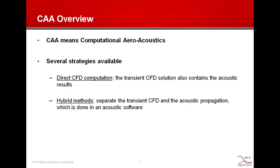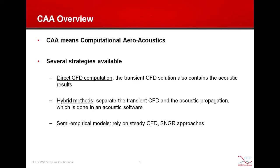The second approach is the hybrid method, which separates the CFD computation in a CFD code and the acoustic computation done in a second step in a more dedicated acoustic software. The third category is semi-empirical models, called the SNGR method — Stochastic Noise Generation and Radiation — which relies only on steady CFD instead of transient unsteady CFD.